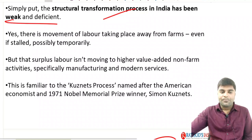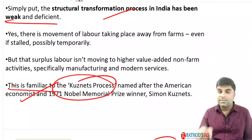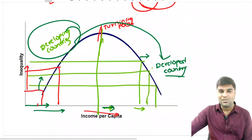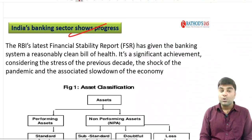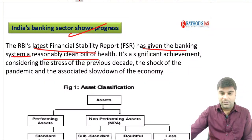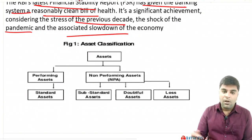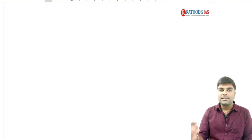This phenomenon we have seen in the economy is similar to the Kuznets process. The next topic we are going to discuss is India's banking sector showing progress. The RBI's latest financial stability report has given the banking system a reasonably clean bill of health — a significant achievement considering the stress of the previous decades and the shock of the pandemic.